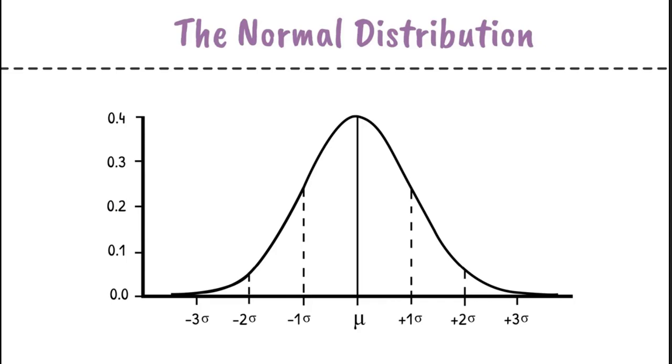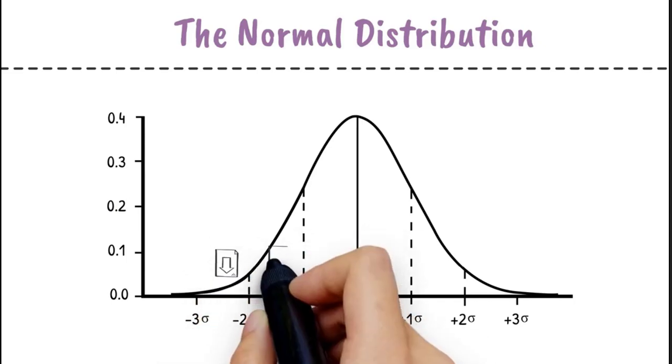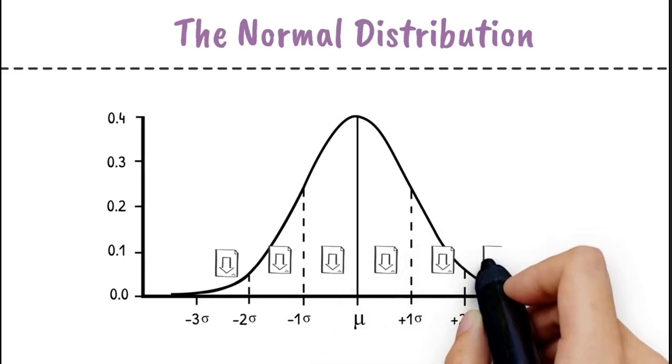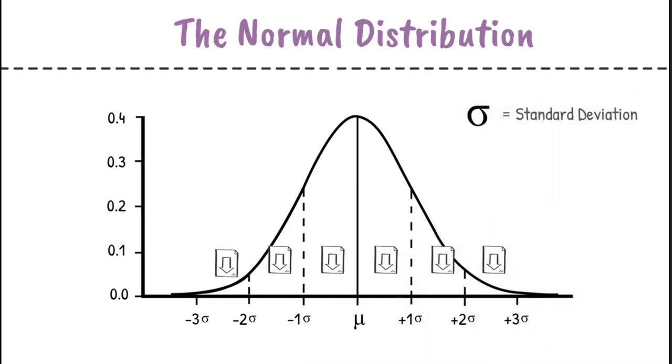Let's turn to look at the bell-shaped curve. Here is the normal distribution. This bell-shaped curve is split up into six sections, which are defined as standard deviations from positive 3 to negative 3.